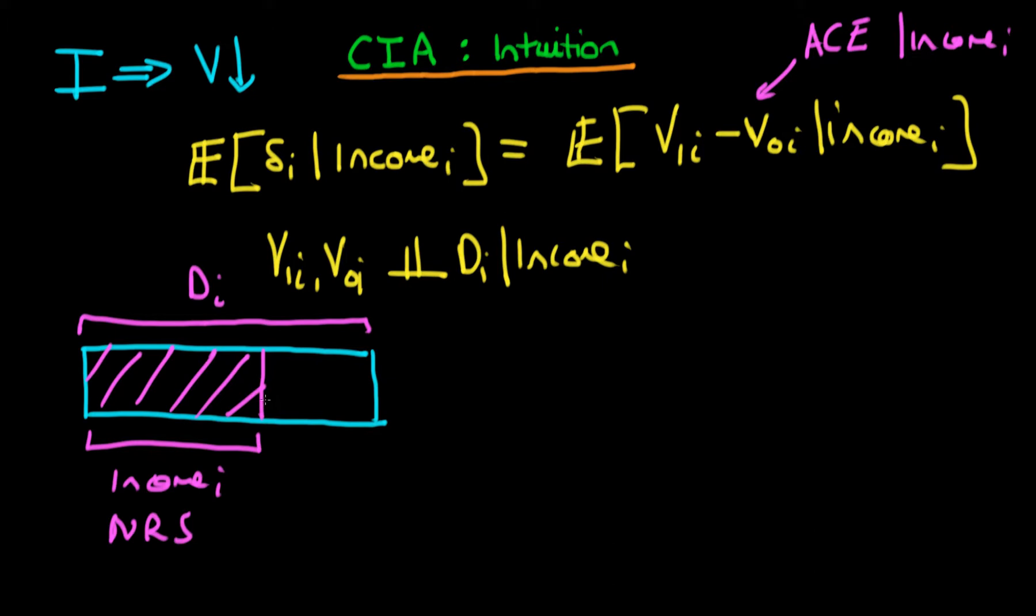But then there is also a part of Di which is, in a sense, random. And it's this bit on the right hand side here. And this is essentially the variance in Di which is not to do with the income of that particular state.